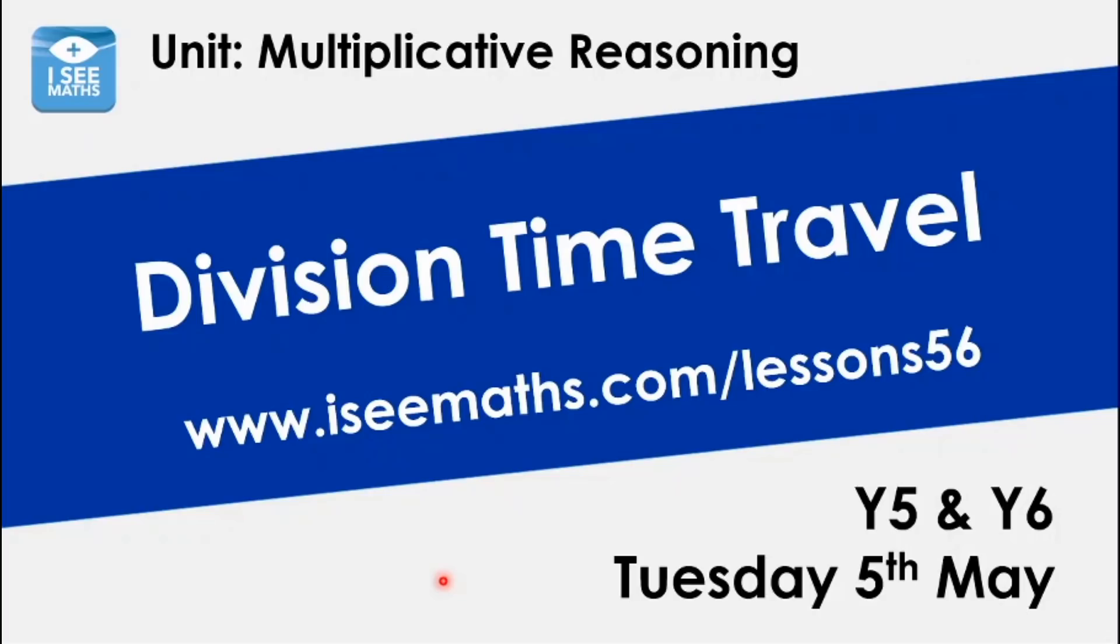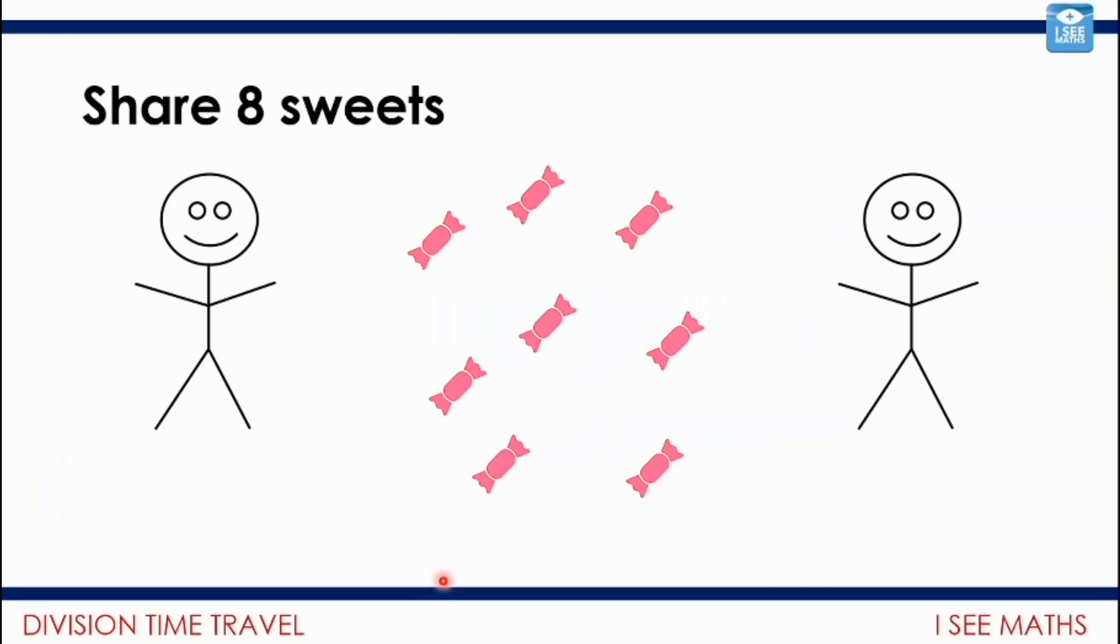One of the first experiences you might have had might have been something like this: share eight sweets between you and a friend. So you might have done one for me, one for you, and believe me it's always one for me first when we're working with children and sweets. One for me, one for you, one for me, one for you, one for me, one for you. And then what's the answer when we share eight sweets between two people? Well it's how many each person has, that is of course four.